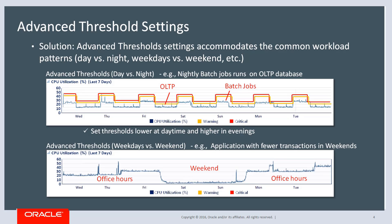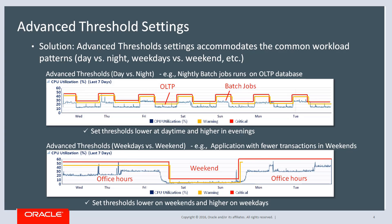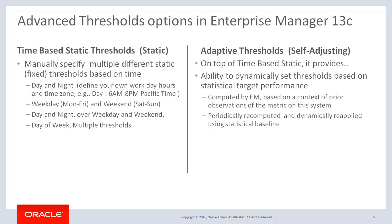Another use case is when your system or application has fewer activities during the weekend. In this case, you can set a lower threshold during the weekend and higher in the weekdays. The key point is that you can set two or more different thresholds for a single metric based on time, depending on the expected workload. We have two threshold options: time-based static threshold and adaptive threshold, which is a self-adjusting option.